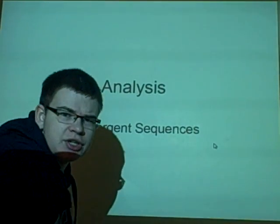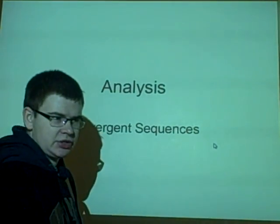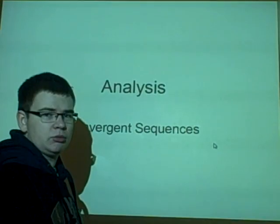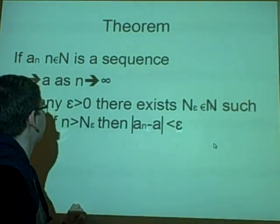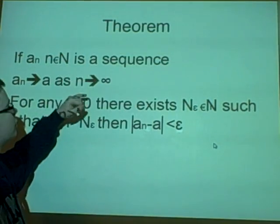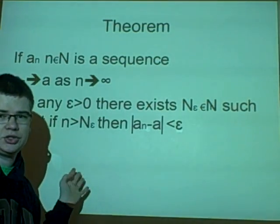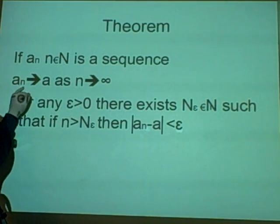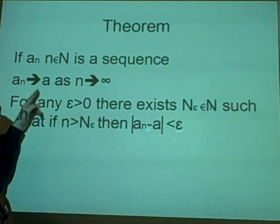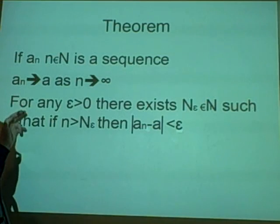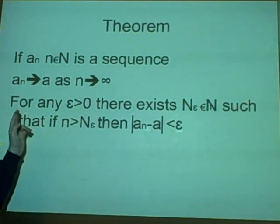This is the sixth lecture on analysis and it's on convergent sequences. Basically, if you have a sequence as a function it will go towards a certain number and we're meant to prove what number it goes towards. First of all, the theorem: if a_n where n is a natural number is a sequence — a1 would be the first one, a2 and so on — and a_n goes towards a as n goes towards infinity, this just means the limit is a.